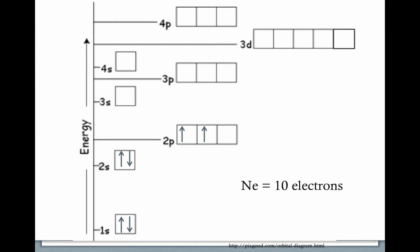Let's try neon, which has ten electrons. We already have two in the 1s, two in the 2s, and two in the 2p from the previous example — that's six. With four more electrons, I put one more in the third orbital of the 2p sublevel, then double up the remaining three in the 2p sublevel. The electron configuration for neon is 1s2, 2s2, 2p6.